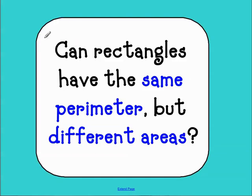Okay, welcome to day three of our flipped classroom. Tonight we're going to ask ourselves the question and see if we can prove it. Can rectangles have the same perimeter but different areas?